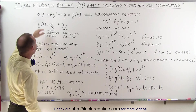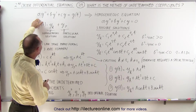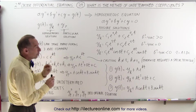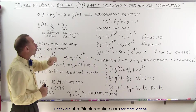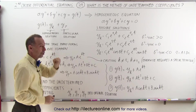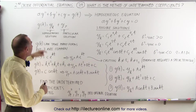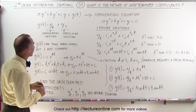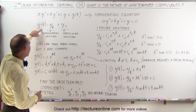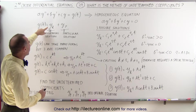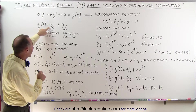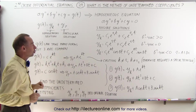We use it to solve non-homogeneous second-order differential equations when they have constant coefficients. We're going to use a different method when we don't have constant coefficients. The solution is always going to be the sum of the solution to the homogeneous part and the particular solution.